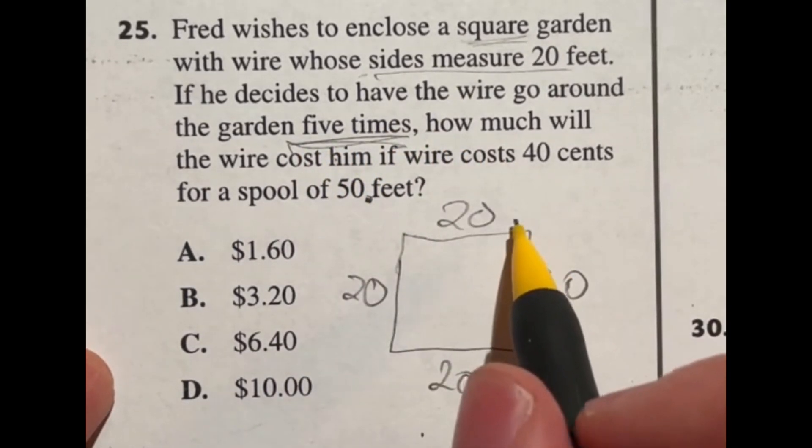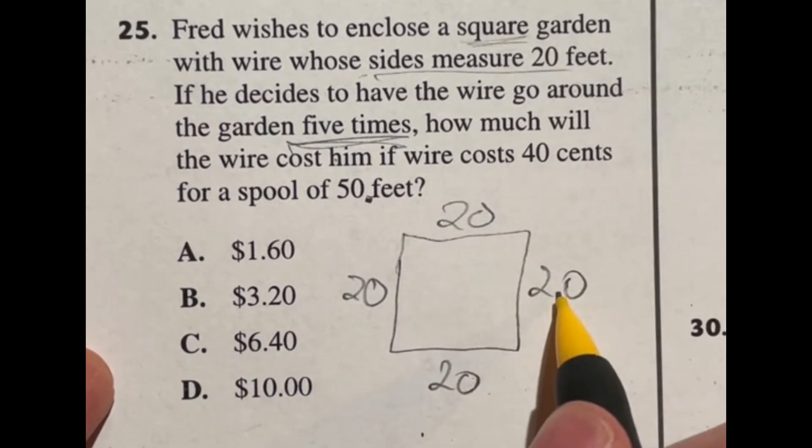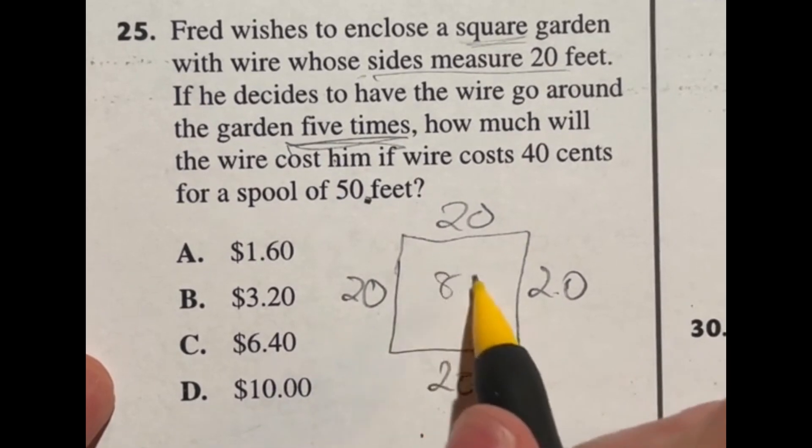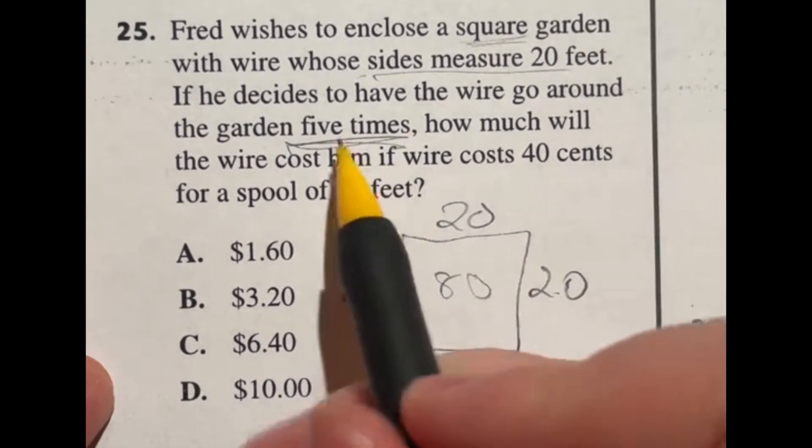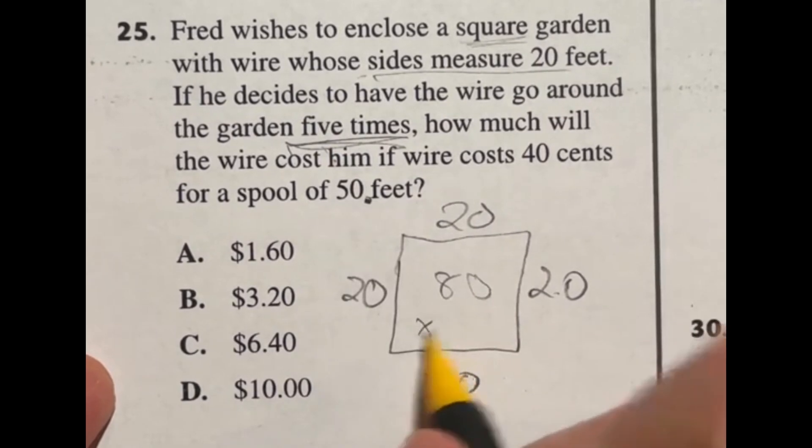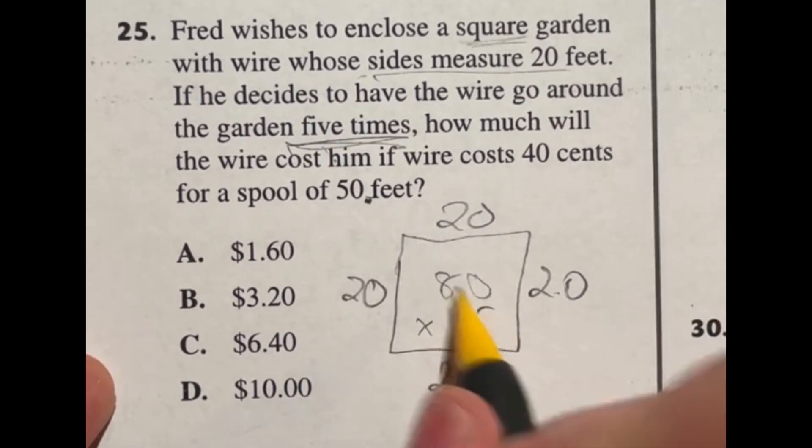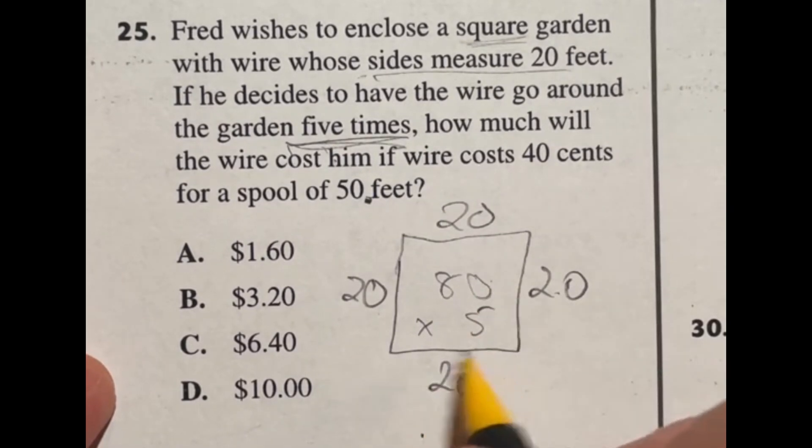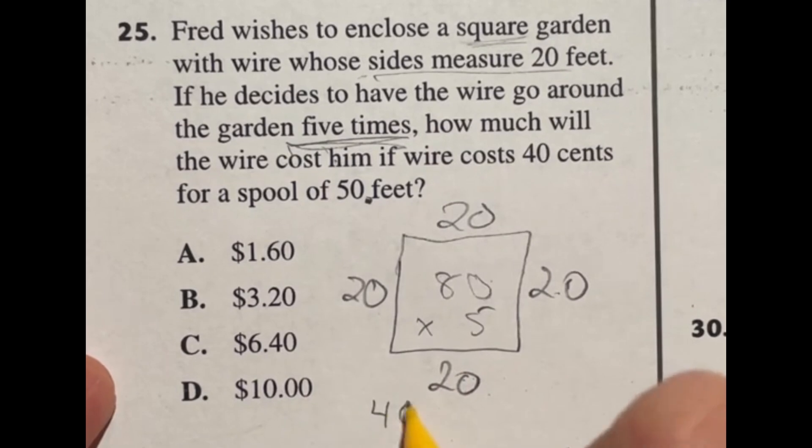First off let's see how much one time around is. We got 20 plus 20 is 40 plus another 20 is 60 plus another 20 is 80. So this whole thing is 80 all the way around and we're doing it five times so I'm just going to multiply that by 5. Well 8 times 5 is 40 with the zero on the end there, means that all the way around here is going to be 400 feet.